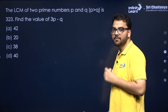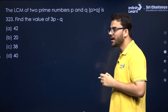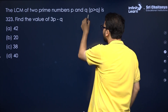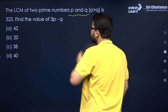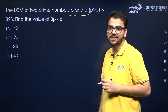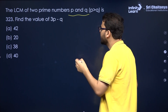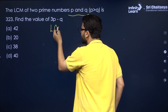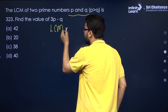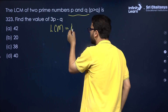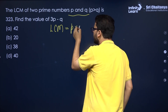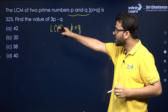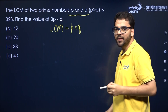P and Q are prime numbers. So what is the LCM of 2 prime numbers? The LCM of 2 prime numbers will be equal to the product of the numbers itself — that is P into Q. And the LCM is already given, that is 323.